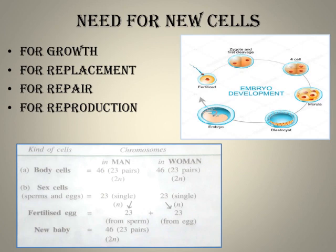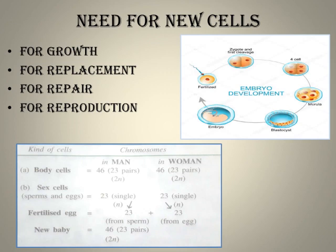In this second lesson, we will discuss the need for new cells. The first reason is growth. When you were born you were small, but you have grown since then. Every organism — plant or animal — begins its life as a single cell, the fertilized egg, called the zygote. This cell divides repeatedly to form a cluster of cells.